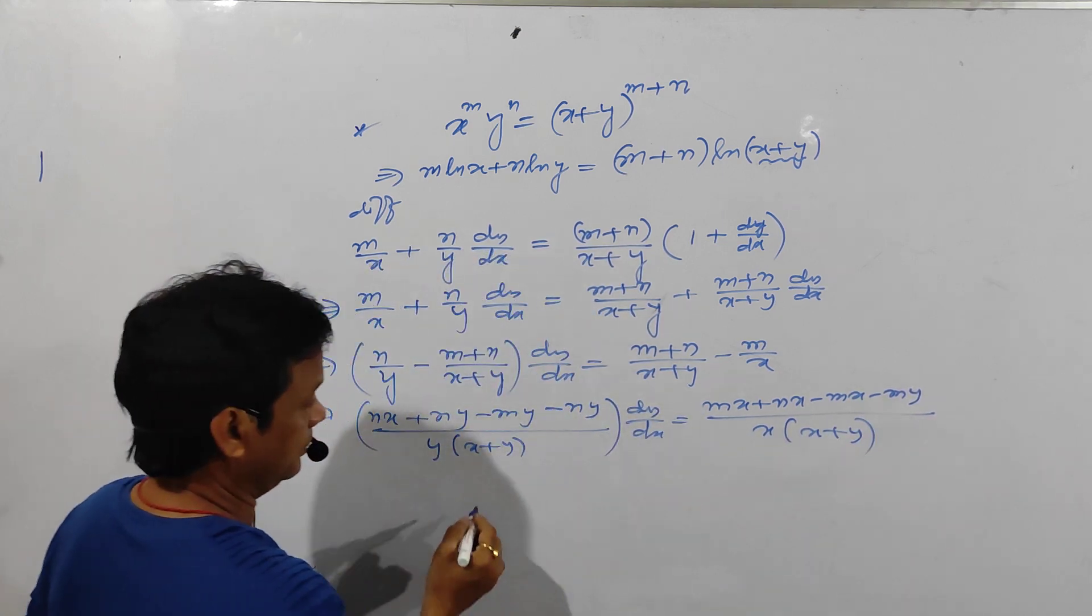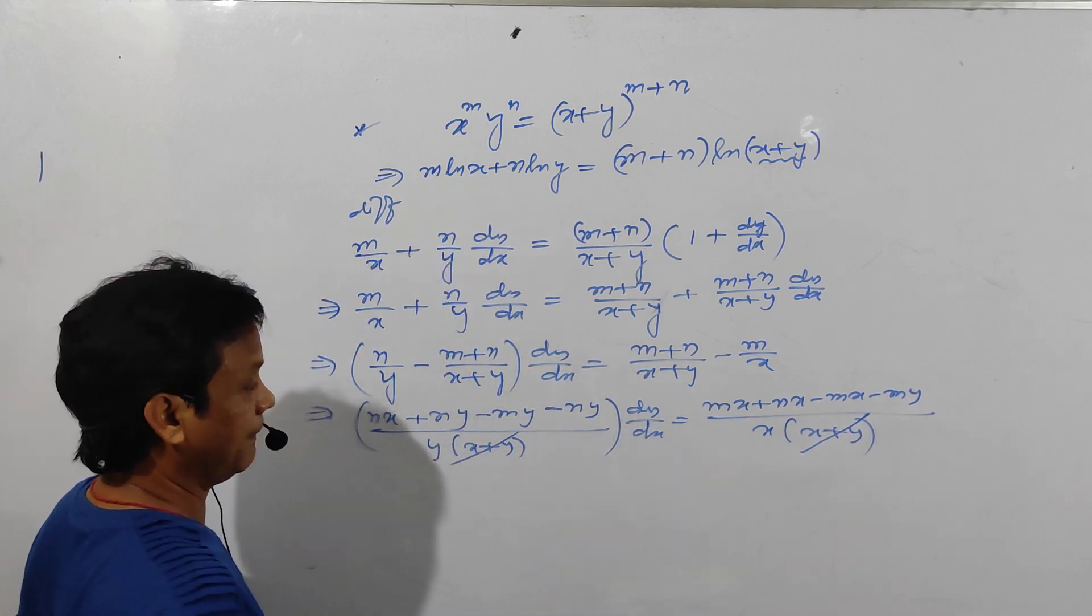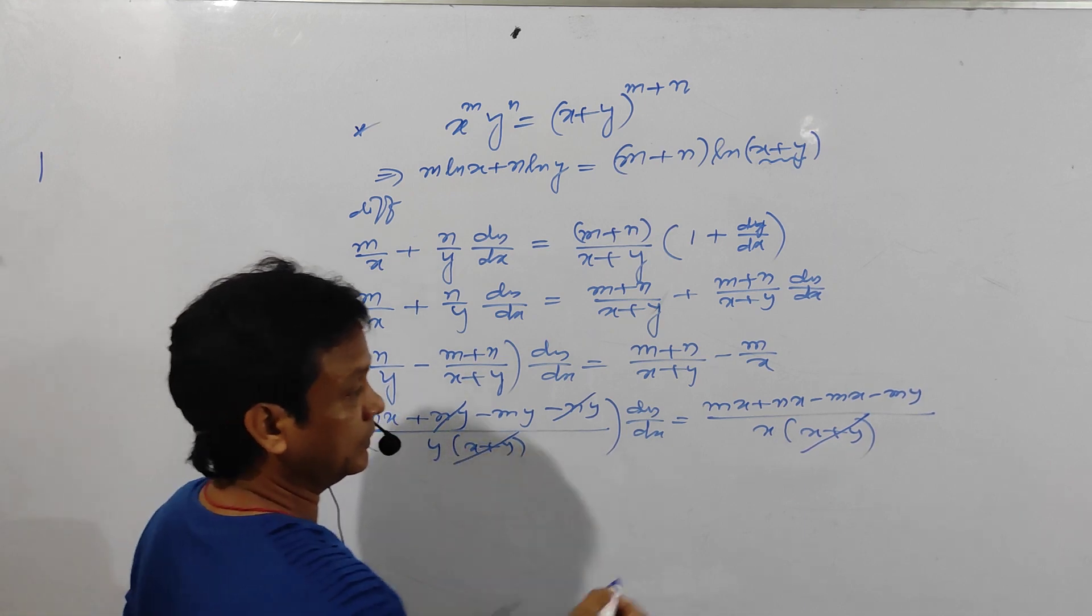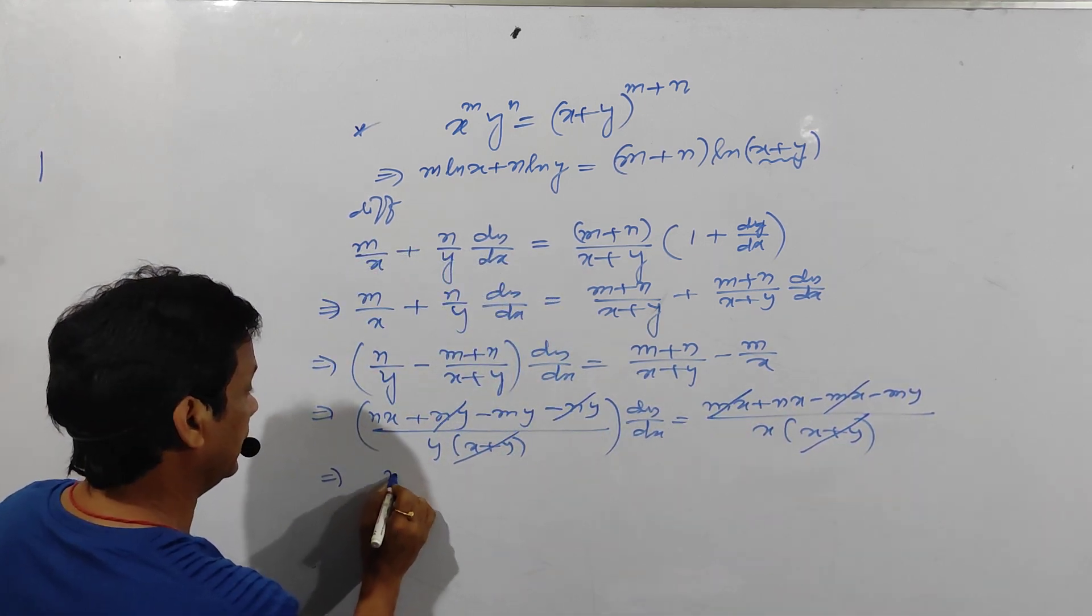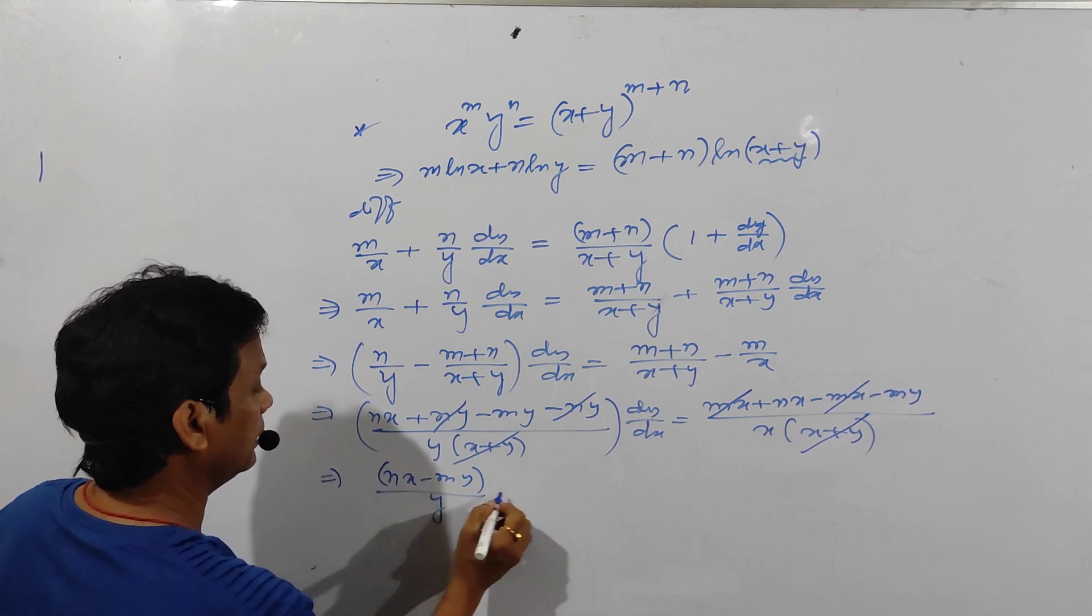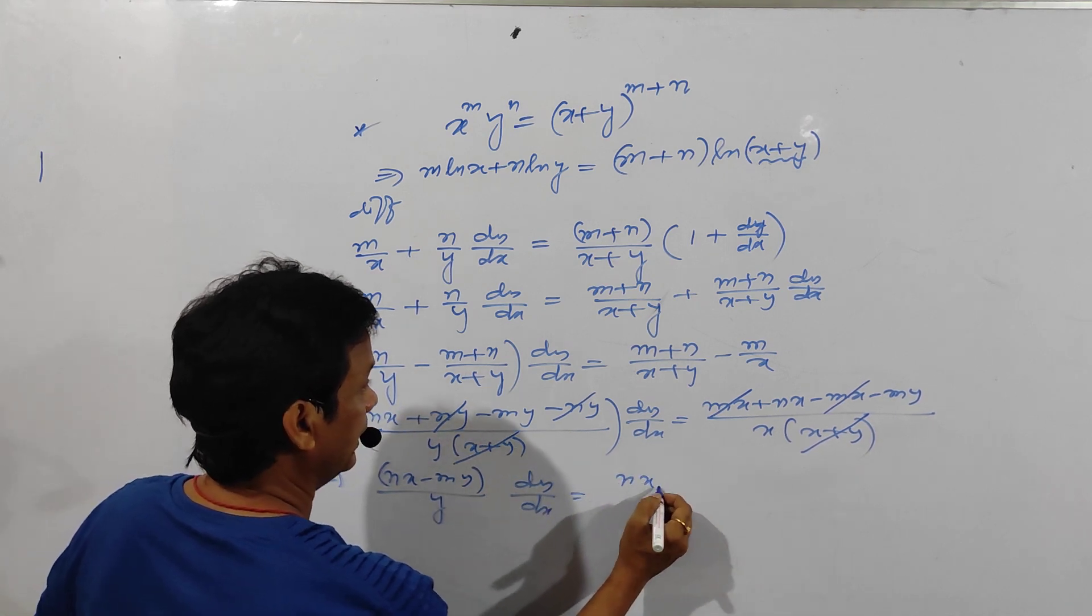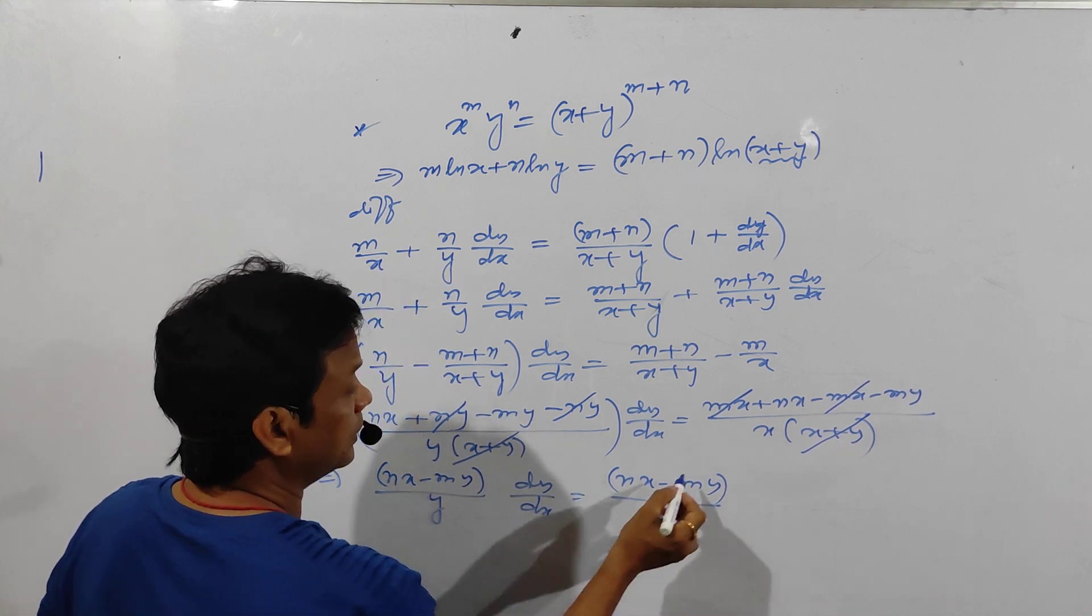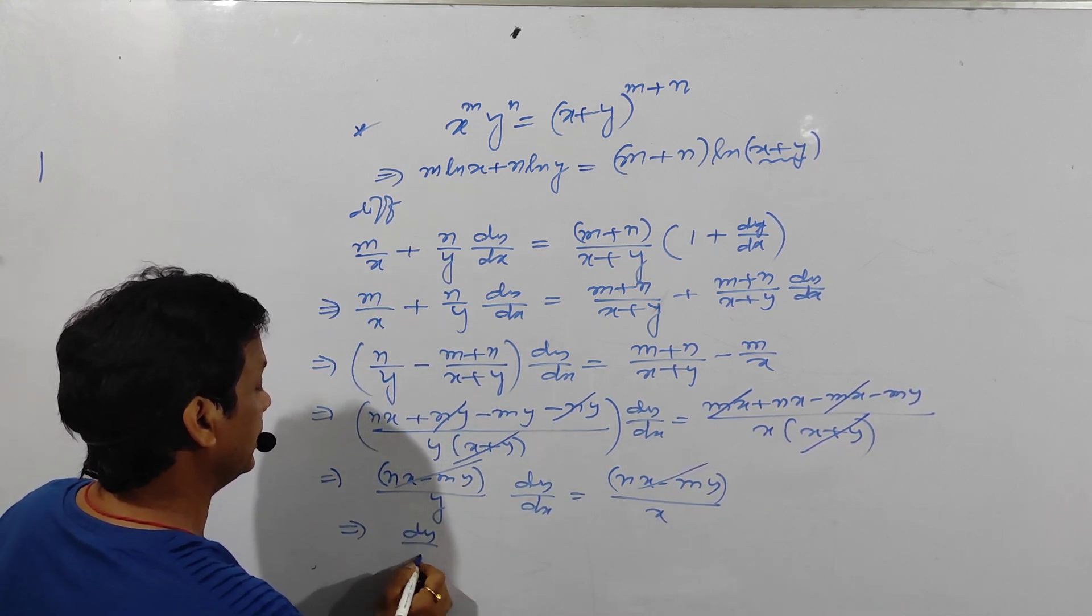See here simply x plus y cancels from both sides. Minus mx plus mx cancel out. Remain nx minus my divided by y, and dy by dx equals nx minus my divided by x. Here the numerator also cancels out, so dy by dx equals y by x.